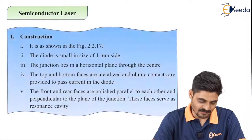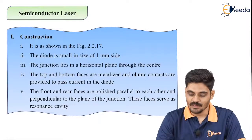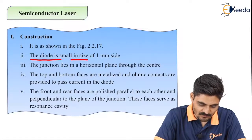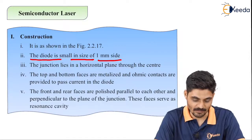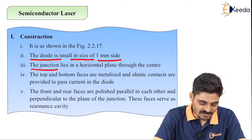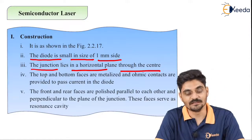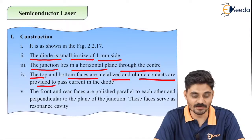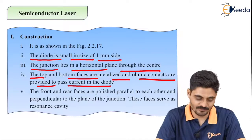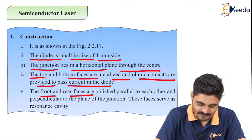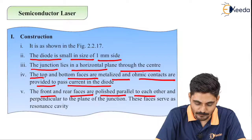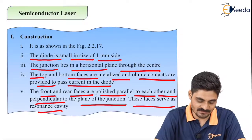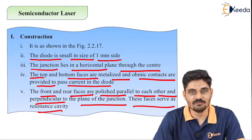In semiconductor laser, the diode is small in size — 1 mm on a side — and the junction lies in a horizontal plane through the center. The top and bottom faces are metallized and ohmic contacts are provided to pass current through the diode. The front and rear faces are polished parallel to each other and perpendicular to the plane of the junction, and these faces serve as the resonance cavity.